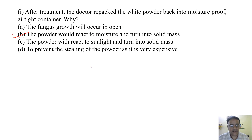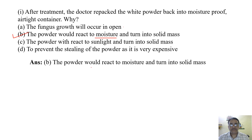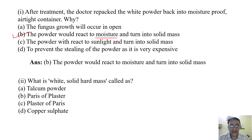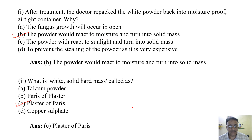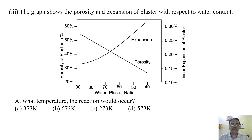Question two: What is the white solid hard mass called? Options include talcum powder, Plaster of Paris, copper circuit, and others. The correct answer is Plaster of Paris.